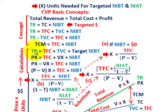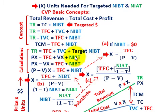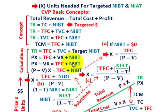For our calculations: total revenues in green equals total fixed cost plus total variable cost plus targeted net income before taxes. Substituting: total revenues is PX (unit price times quantity), and total variable cost is VX (variable unit cost times quantity). So: PX = TFC + VX + targeted net income before taxes. Rearranging: PX minus VX, moving the variable cost to the left side, equals total fixed cost plus net income before taxes.